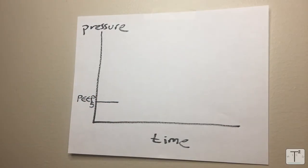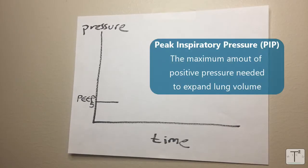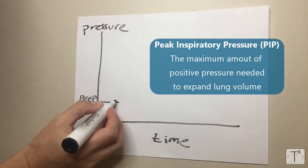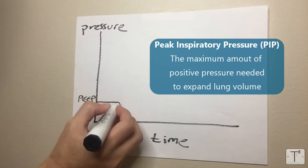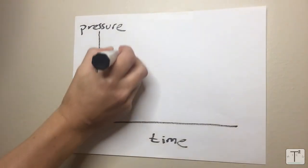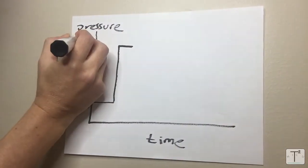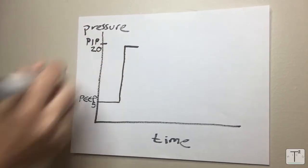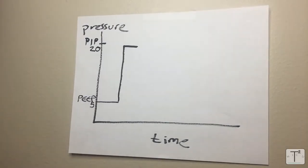The next thing that you need to determine is how much PIP you want to give or the peak inspiratory pressure. This is the maximum air pushed in by the machine. With positive pressure ventilation that's a positive pressure. Let's assume that this is our PIP and in this case let's say it's 20 centimeters of water.